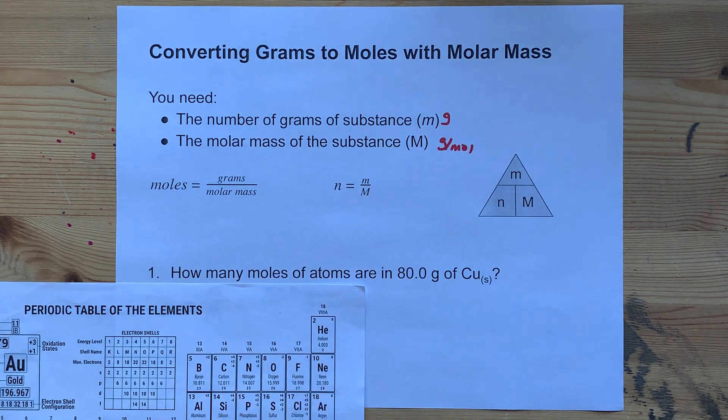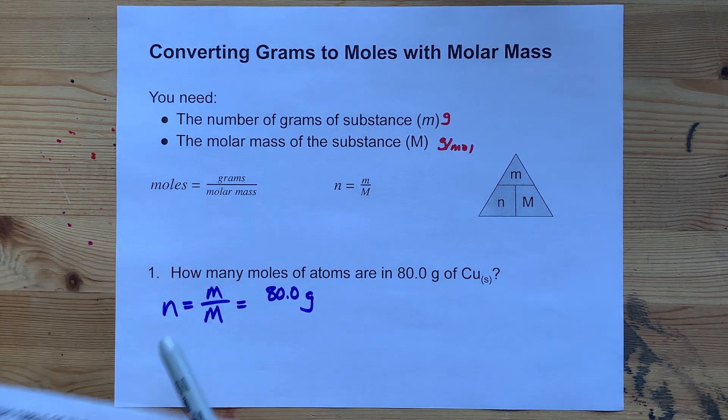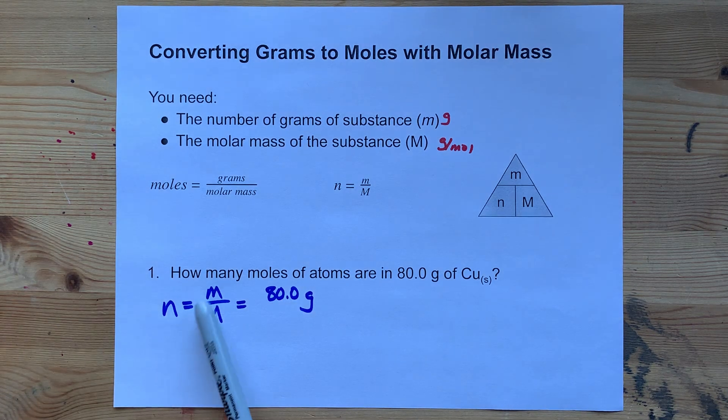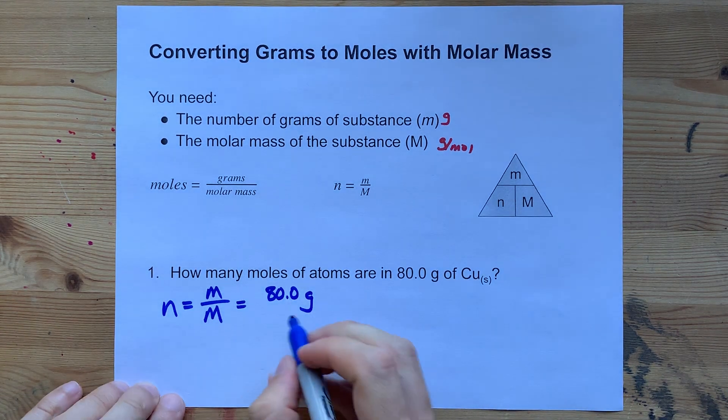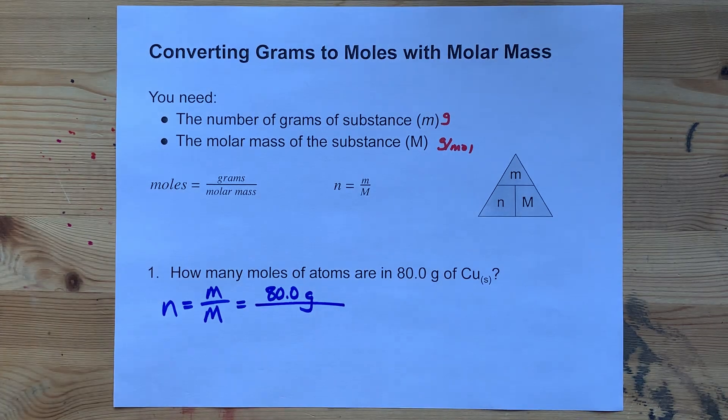How many moles are in 80 grams of copper? Well, you'll use the formula moles equals mass over molar mass. The number of grams is given to you in the question, it's 80.